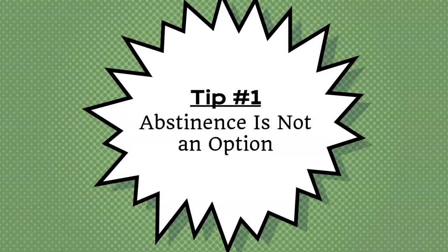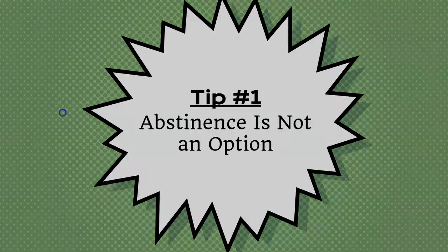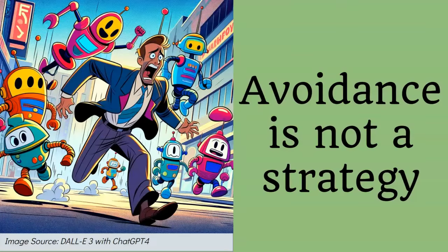So, let's talk about our first tip. The first is, abstinence is not an option. Abstinence has never been a great strategy. It didn't work for prohibition, the war on drugs, or abstinence-only sex education. It's not going to work for generative AI. This means that we have to learn about it, play with it, and yes, think about it in our classes.